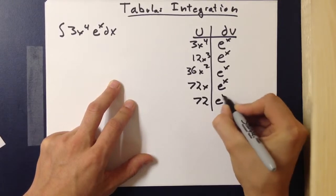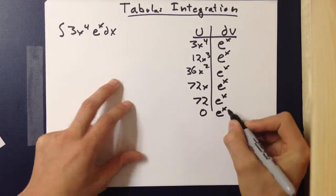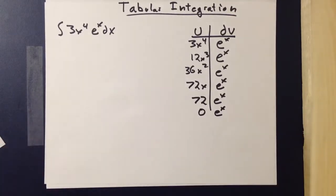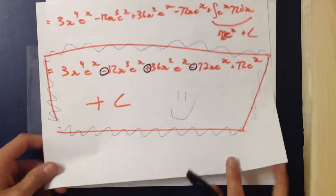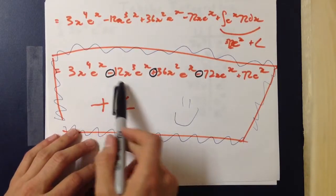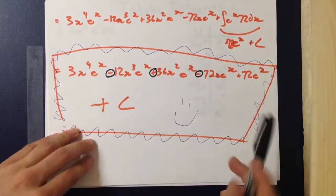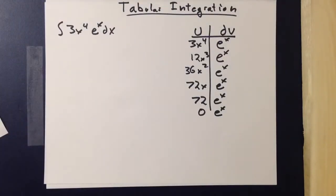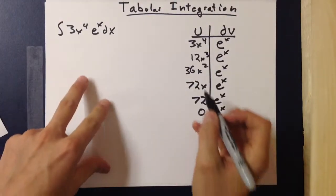Continuing: 72, e to the x, then 0, e to the x. Now in integration by parts the terms are alternating, as seen by this result right here — negative, positive, negative, positive, negative. So you must also alternate your signs here.